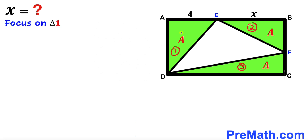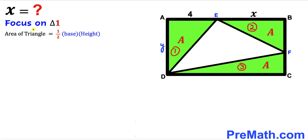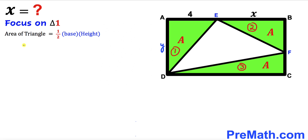Now let's focus on triangle 1. Let's assume that this side length AD of this triangle is Y. Let's recall the area of a triangle formula: Area A equals one half times base times height. In our case, the base of triangle 1 is 4, and the height is Y, and the area is uppercase A. So let's fill in the blanks in this formula.